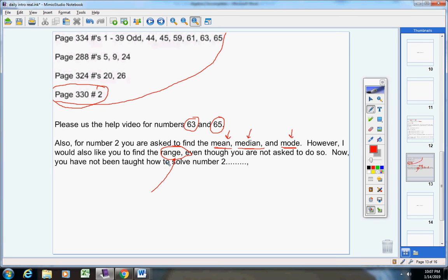So on range, that means you subtract the largest number from the smallest number. But listen, when you work on number two, do what the directions say plus find the range. And if you don't know how to do any of that, use the help video. Got it?